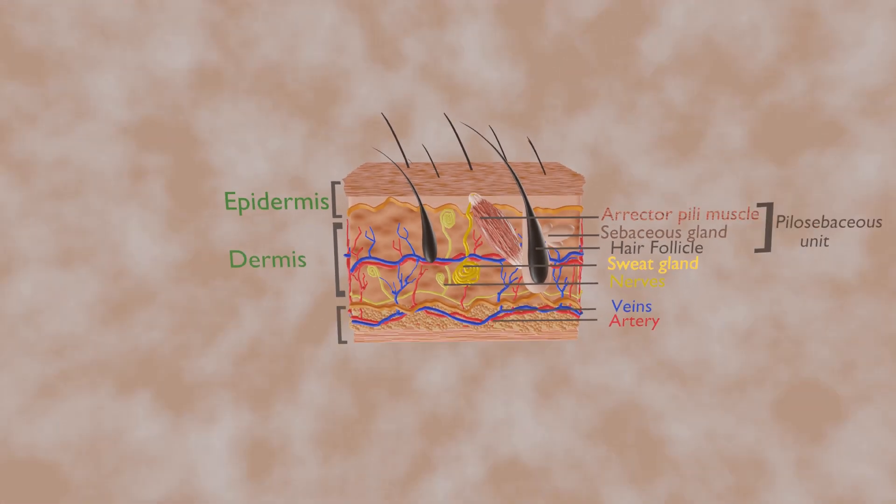Under these two skin layers is a fatty layer of subcutaneous tissue, known as the subcutis or hypodermis.